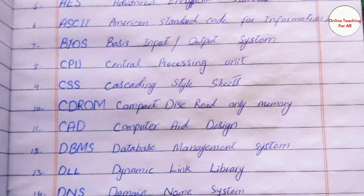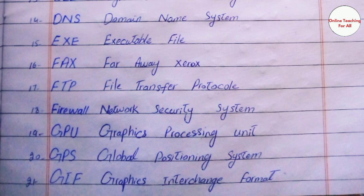CPU - Central Processing Unit. CSS - Cascading Style Sheets. CD-ROM - Compact Disc Read Only Memory. CAD - Computer Aided Design. DBMS - Database Management System. DLL - Dynamic Link Library. DNS - Domain Name System. EXE - Executable File. FAX - Faraway Xerox. FTP - File Transfer Protocol. Firewall - Network Security System.